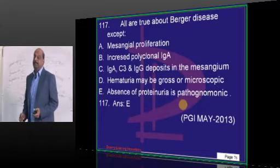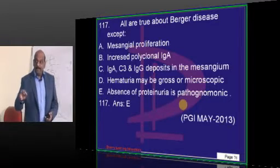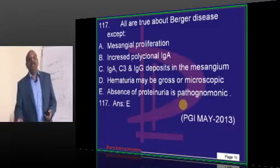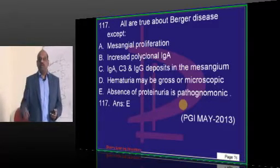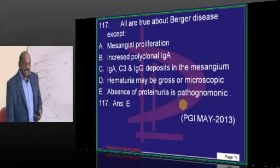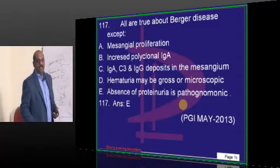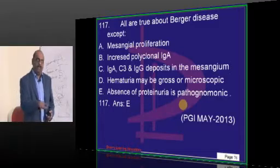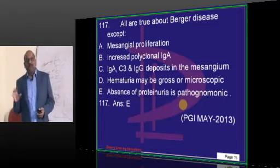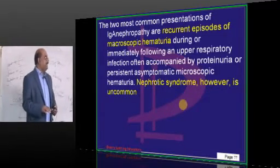How a patient of Berger's disease typically presents is a very important question. It is called recurrent benign hematuria. The patient will have a respiratory infection like sore throat, and within 2-3 days will develop hematuria. Unlike in PSGN (post-streptococcal glomerulonephritis), where hematuria develops after about 3 weeks, this is called syn-pharyngitic hematuria. There is no proteinuria, but the absence of proteinuria cannot be called pathognomonic.